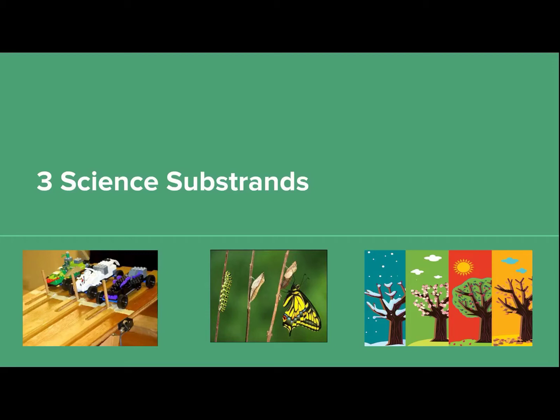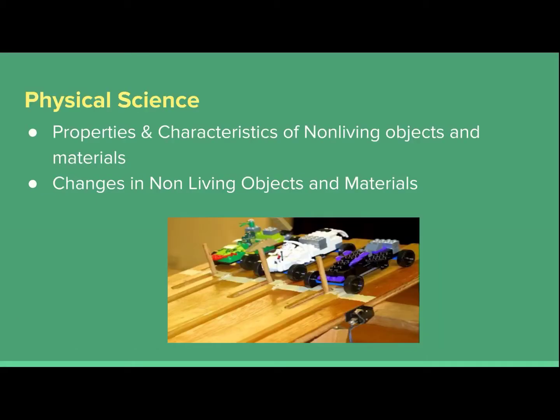The first substrand that I wanted to talk about is physical science. Physical science focuses on non-living objects and materials, the properties and characteristics of them, and also changes in them. For example, different types of non-living objects include substances, different types of liquids, fabrics, materials such as plastic or metal, different types of papers, or just different objects that are made from those materials.